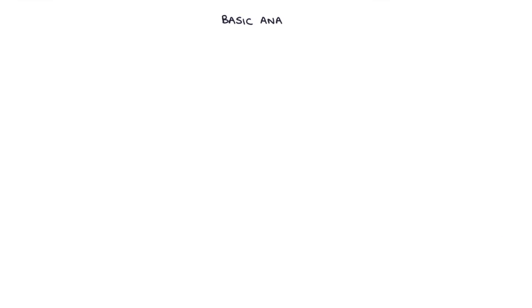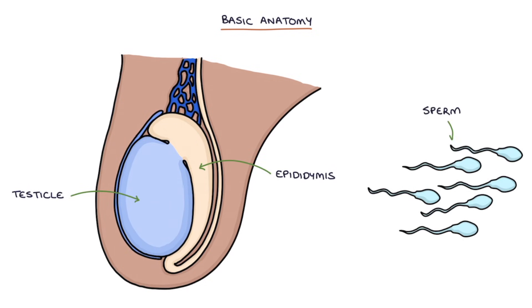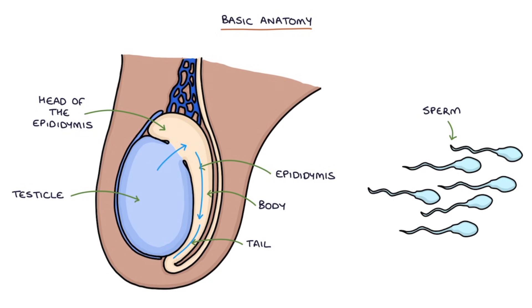Let's talk about some very basic anatomy. At the back of each testicle is the epididymis. Sperm are released from the testicle into the head of the epididymis, which is connected to the top of the testicle. The sperm travel through the head, then the body, and then to the tail of the epididymis. The epididymis is where the sperm are matured and stored until they're eventually released into the vas deferens.